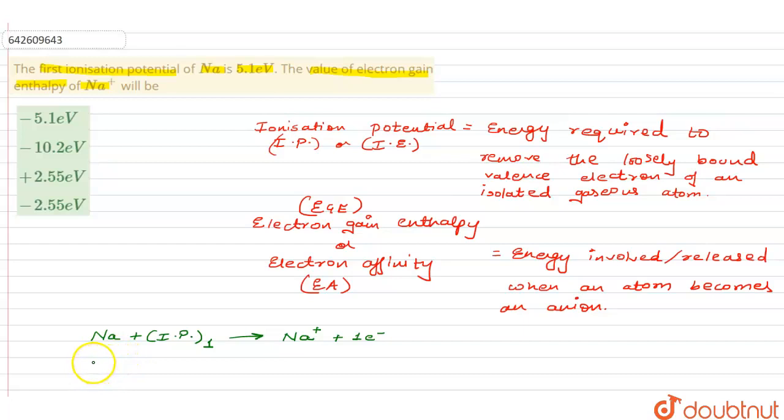Now, electron gain enthalpy of Na+ is what? It would be the energy which would be needed for the combination of this one electron to convert it into its neutral state. And this energy which is released out over here is nothing but your EGE, electron gain enthalpy.